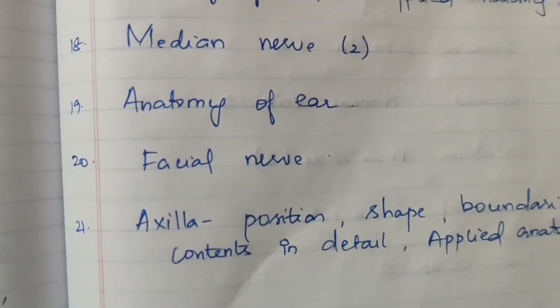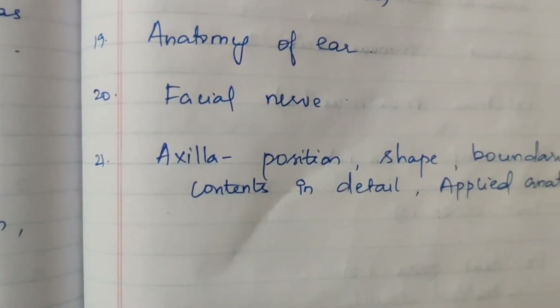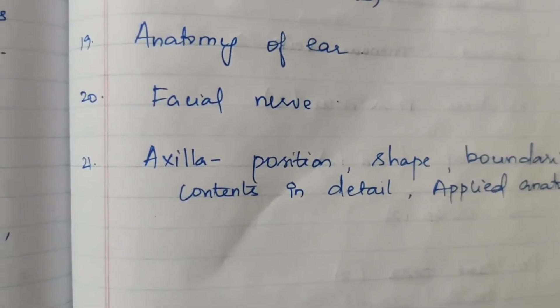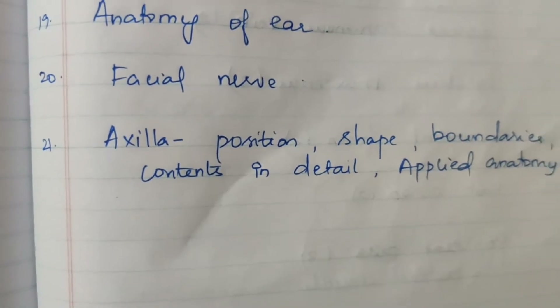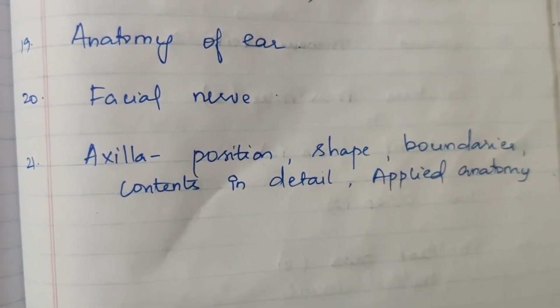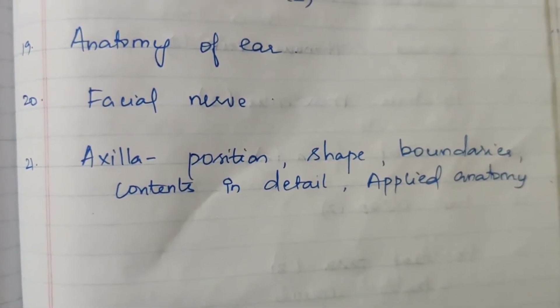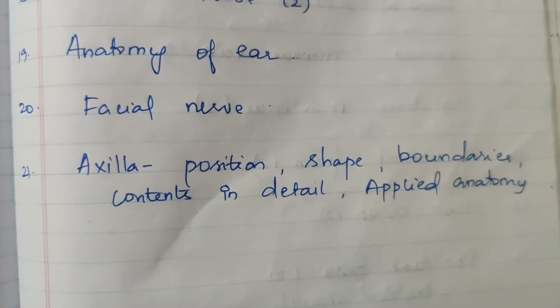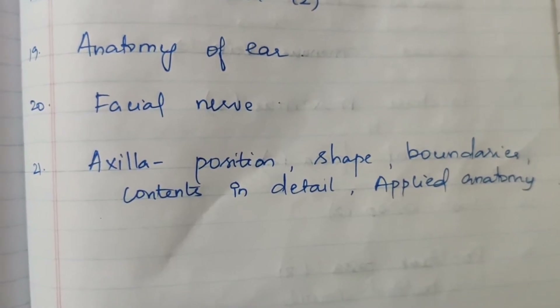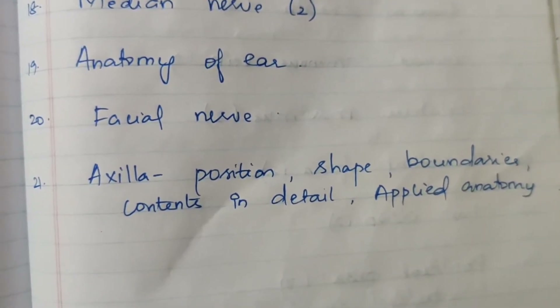Nineteenth question: anatomy of ear. Twentieth question: facial nerve. Twenty-first question: axilla — its position, shape, boundaries, contents in detail, and applied anatomy. This completes all the 15-mark questions — these are mostly repeated questions.